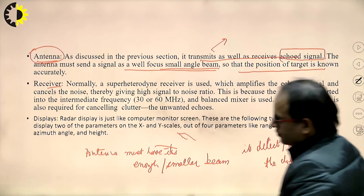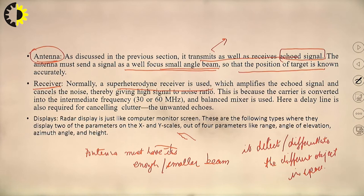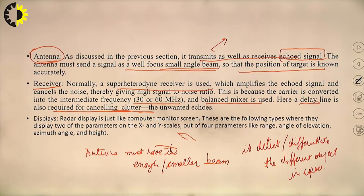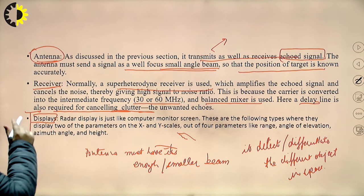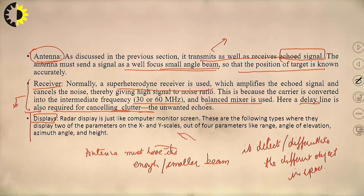The receiver is generally a super heterodyne receiver with an intermediate frequency of 30 or 60 MHz. In the receiver, a balanced mixer and delay line circuit is used for cancelling clutter or unwanted noise. The receiver also includes a block that determines the minimum detectable signal or threshold signal.